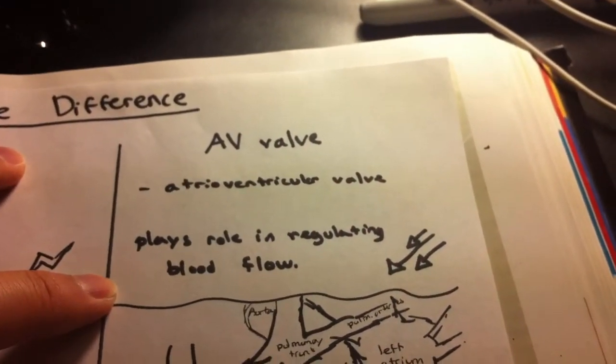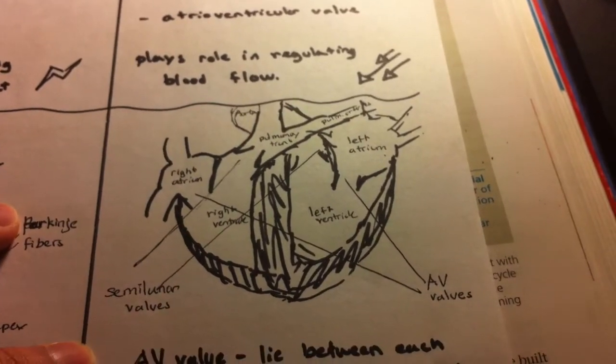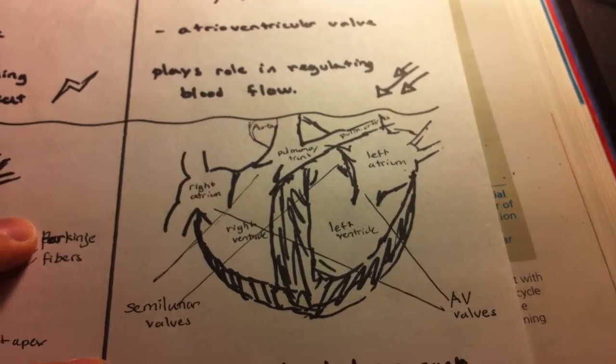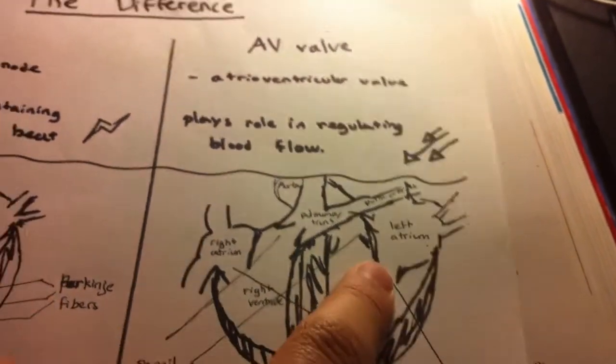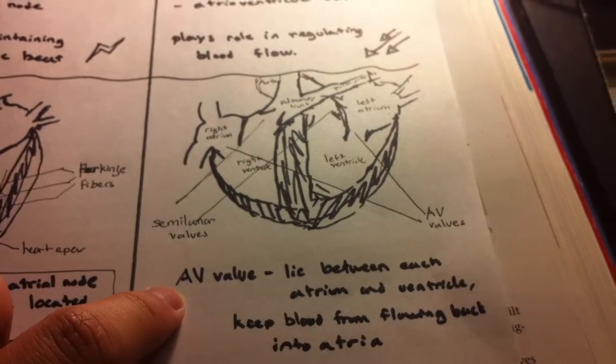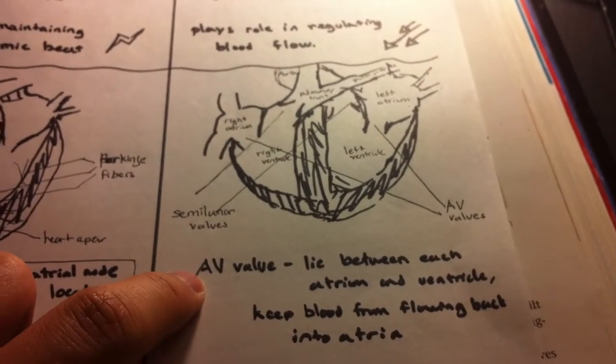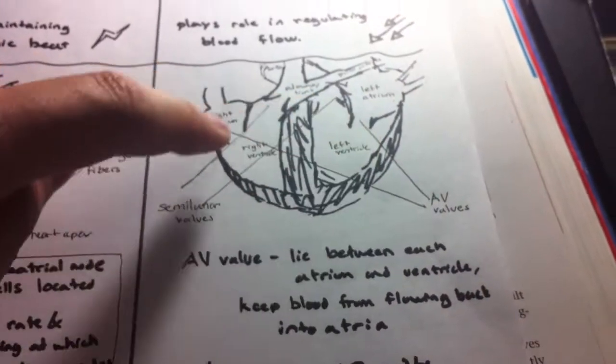It plays a role in regulating blood flow. So here again is an illustration of the heart. The AV valves are located here and here and appear with the semilunar valves. What the AV valves do is lie between the atrium and the ventricles and they keep blood from flowing back into the atria, so no reverse flow.